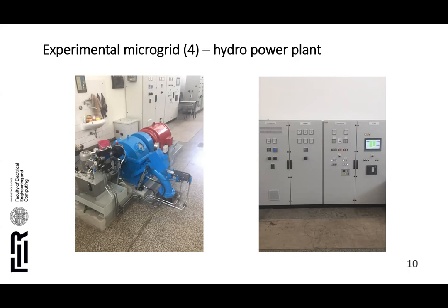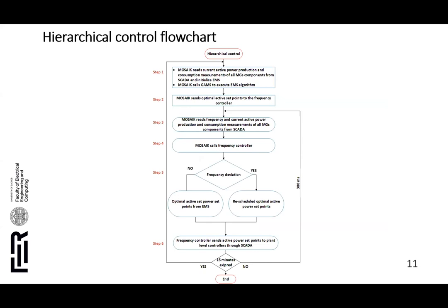This figure shows the working principle of the hierarchical control approach. The entire operating procedure consists of six steps. Step one is conducted every 15 minutes: the co-simulation framework reads current active power measurements, initializes the upper optimization control algorithm, and executes it in a general algebraic modeling system. The results are optimal active power set points for each control unit for the next 15 minutes. In step two, Mosaic sends these optimal active power set points to the frequency controller.